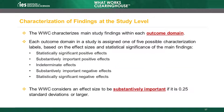Within each outcome domain, the WWC characterizes main study findings. The WWC assigns one of five possible characterization labels to a domain based on the direction, magnitude, and statistical significance of the findings. These labels are: statistically significant positive effects, substantively important positive effects, indeterminate effects, substantively important negative effects, and statistically significant negative effects. The WWC defines a substantively important effect size as one that is 0.25 standard deviations or larger.